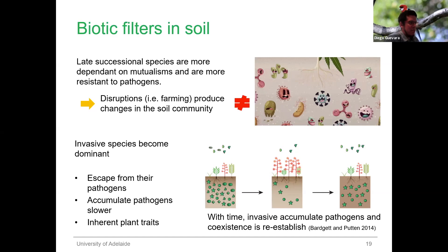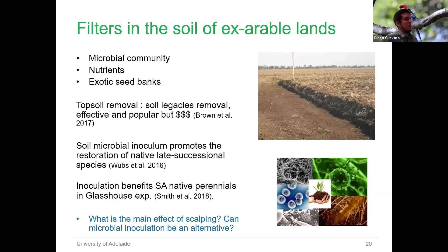With time, invasive species accumulate pathogens anyway, and a coexistence between invasive and native species is established — however, this could take decades. That's why people have developed restoration techniques to make things happen faster, especially in ex-arable lands where there are a lot of soil legacies produced by farming: a microbial community influenced by the invasive species, high levels of nutrients in the soil, and exotic seed banks. To get rid of these legacies, people use topsoil removal, which is basically removing the topsoil layer and getting rid of all these legacies at the same time — but it's pretty expensive. Soil microbial inoculation could be an alternative.